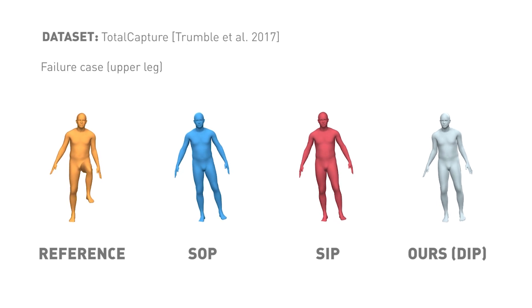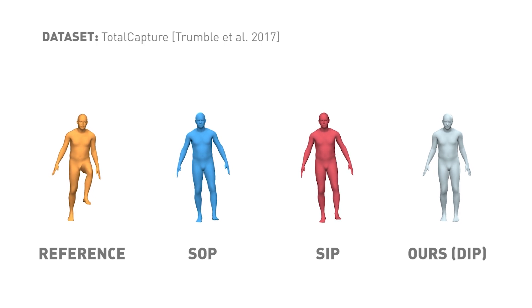This sequence shows a failure case where both the baselines and our model struggle to accurately reconstruct the leg rays. Note that this is a challenging motion due to the ambiguity in the orientation measurements.